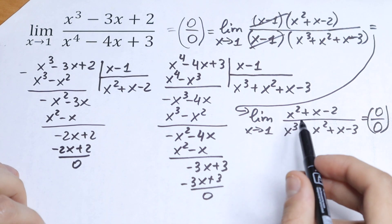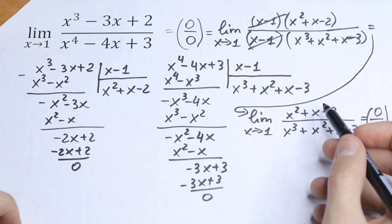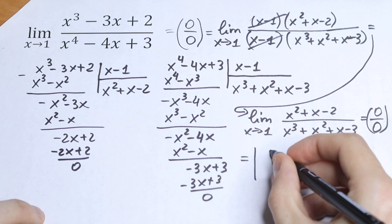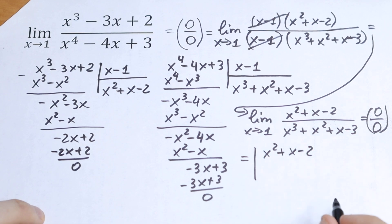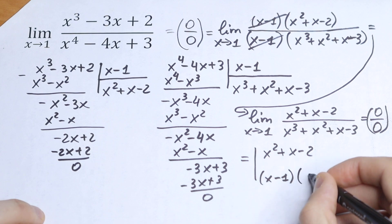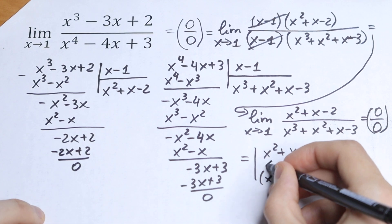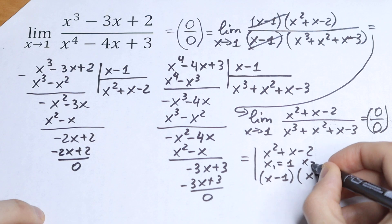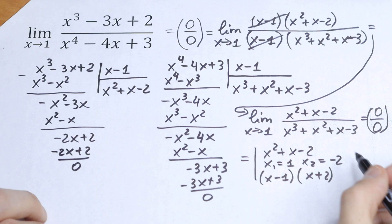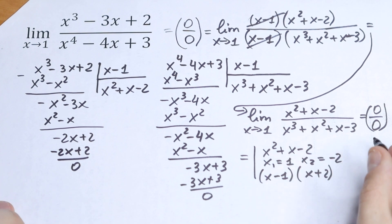We need to factor x minus 1 from our numerator again. The numerator x-squared plus x minus 2 can be written as (x minus 1)(x plus 2), because we know the roots of this quadratic: x equals 1 and x equals minus 2. So we have our (x minus 1) factor here, and we need to factor x minus 1 from the denominator once more.